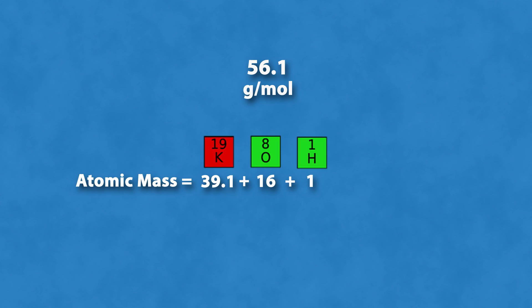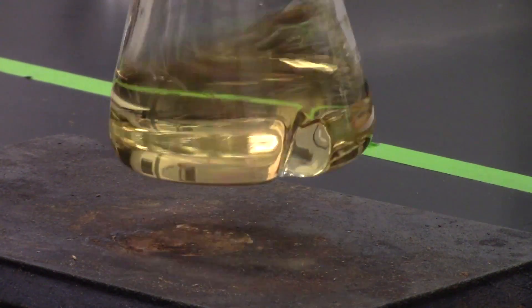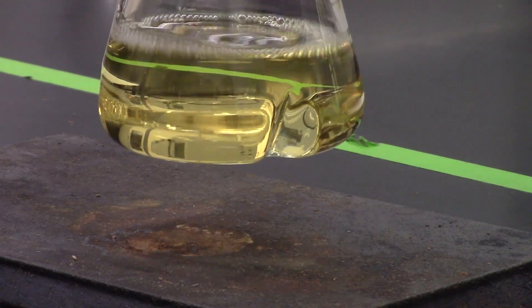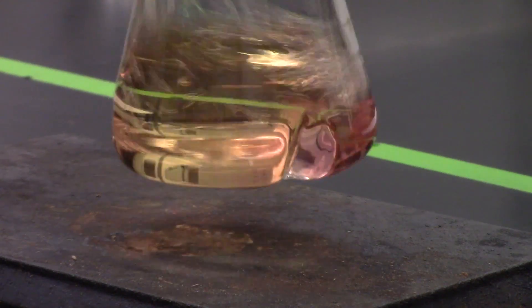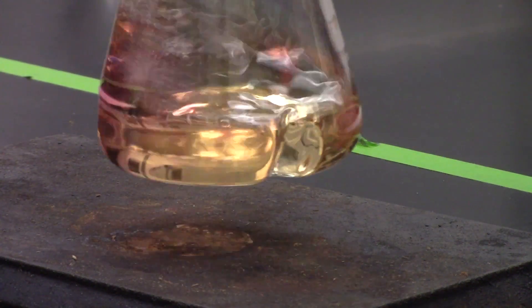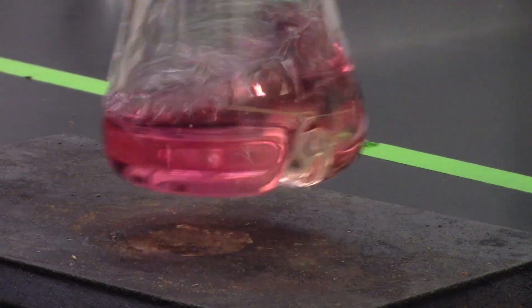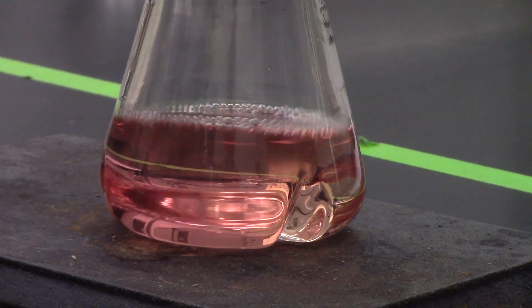This works because the potassium hydroxide is a basic solution which reacts with an acidic solution until all of the acid is consumed and the solution is neutral. Any potassium hydroxide added to the sample after it is neutral causes the solution to become basic and change color.